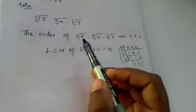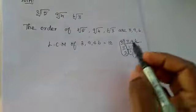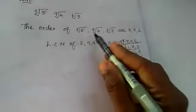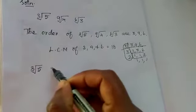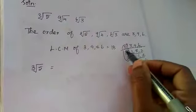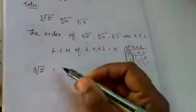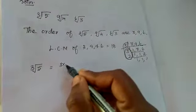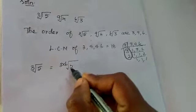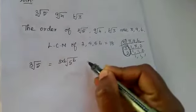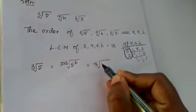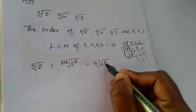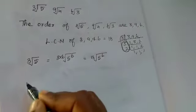We want to make this order as 18. How will we make this? Now which number you want to multiply for the first cube root of 5? Multiply by 6, the remaining 3 is there. Now 3 into 6, 5 power, here also you want to multiply. Now 6, 3's are 18, root of 5 power 6. Next one: